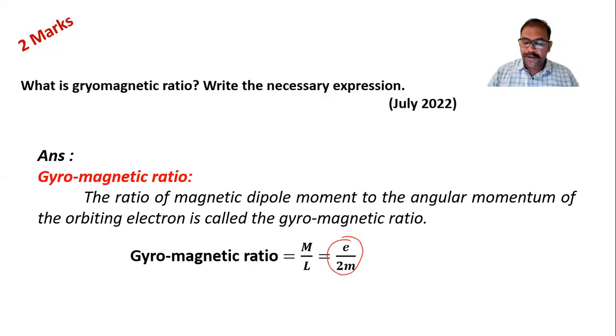Now we get this formula. You know that magnetic dipole moment is given by EVR by 2 formula. If you multiply and divide this formula by mass of electron, then we can write E then MRV divided by 2M. MRV is angular momentum.